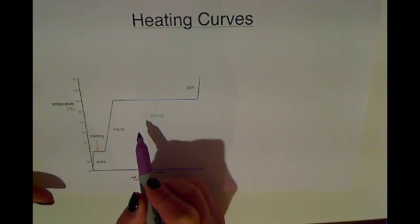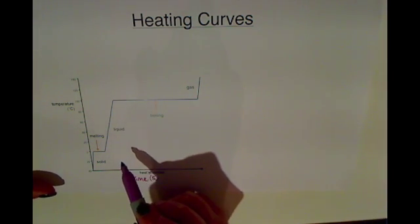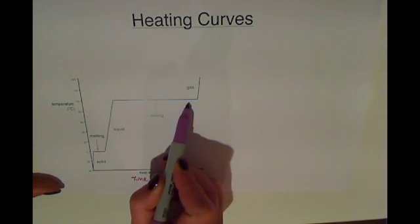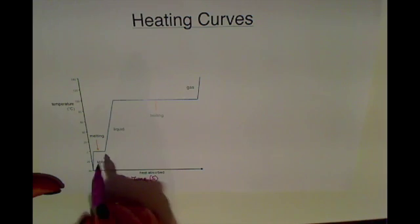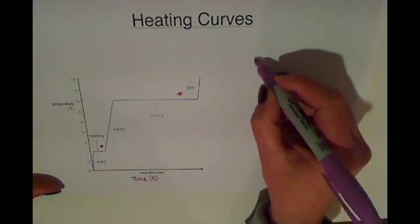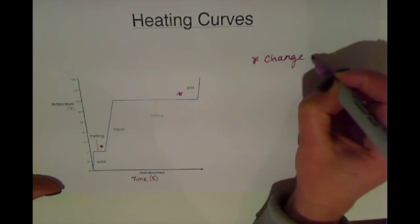You will notice that on these heating or cooling curves you have some flat points here. Got one at the top here for the water and one down the bottom. Now these flat points represent the change of state.